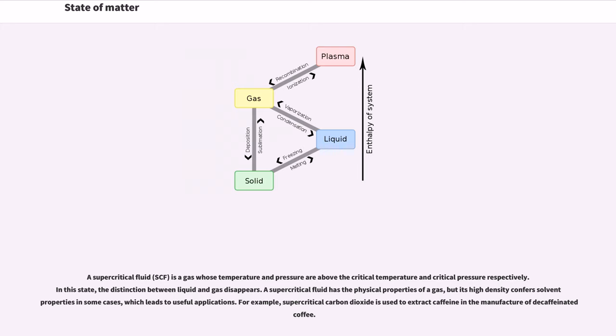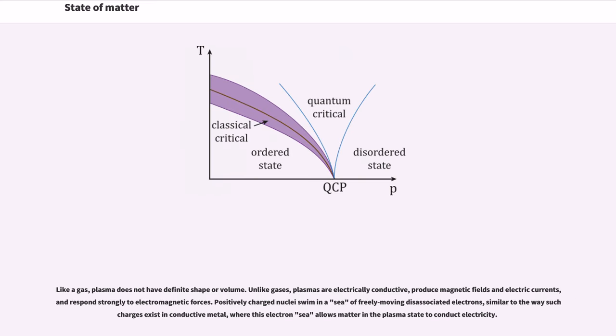For example, supercritical carbon dioxide is used to extract caffeine in the manufacture of decaffeinated coffee. Like a gas, plasma does not have definite shape or volume. Unlike gases, plasmas are electrically conductive, produce magnetic fields and electric currents, and respond strongly to electromagnetic forces. Positively charged nuclei swim in a sea of freely moving disassociated electrons, similar to the way such charges exist in conductive metal, where this electron sea allows matter in the plasma state to conduct electricity.